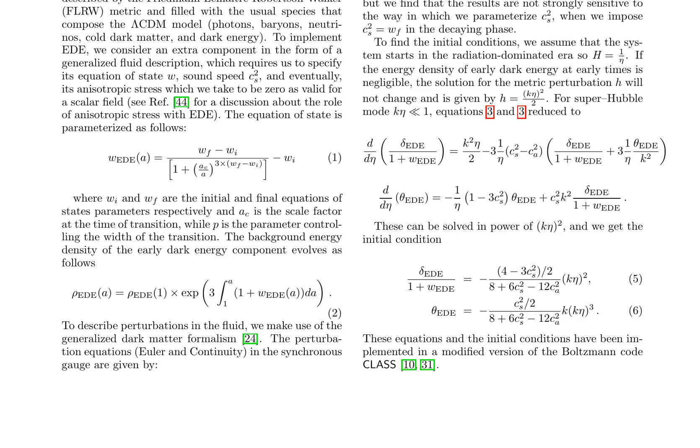The perturbation equations in the synchronous gauge are given by two equations, describing the evolution of the density perturbation delta EED and velocity divergence theta EED of the EED fluid. The sound speed C squared s relates the density and pressure perturbations as C squared s equals delta P over delta rho.